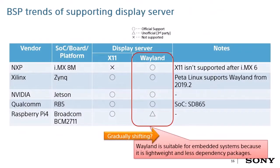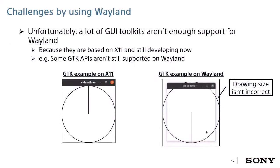I will explain about BSP trends of supporting display servers. Here is an example list of some SoC platforms: NXP, Xilinx, NVIDIA, Qualcomm, Broadcom, and Raspberry Pi. Many vendors support Wayland, and it may be gradually shifting to Wayland. NXP doesn't support X11 on some of its latest boards. Wayland is a suitable display server for embedded systems. However, a lot of GUI toolkits don't have enough support for Wayland, because they are based on X11 and are still developing.